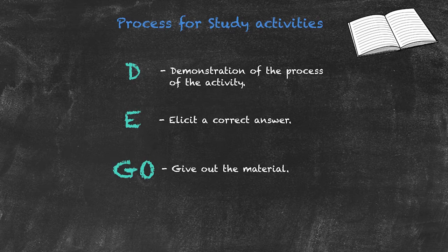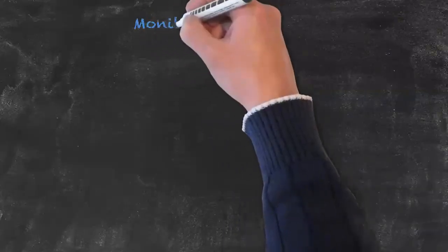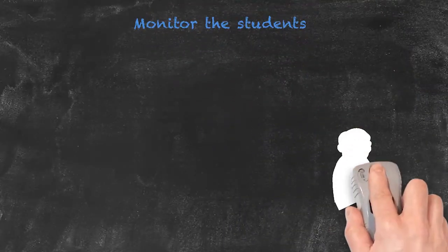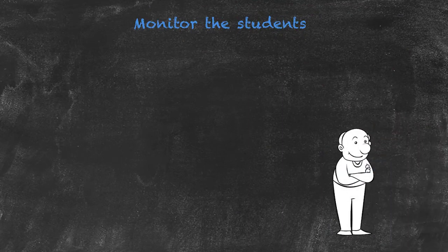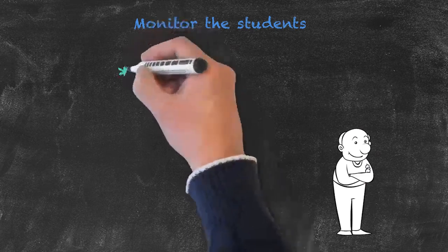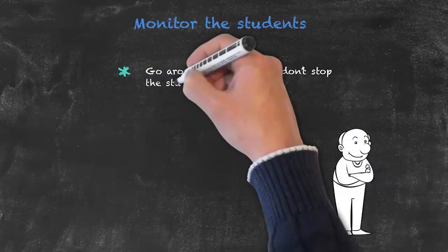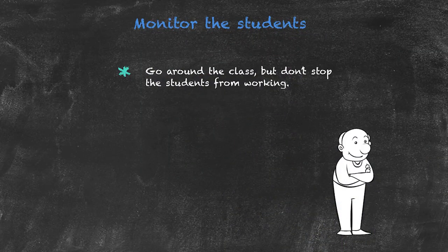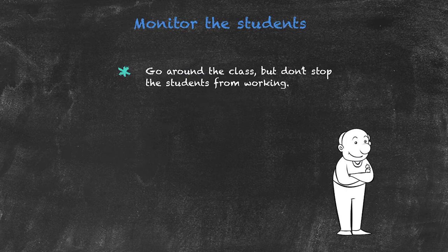Whilst the activity is taking place, you as the teacher can monitor what is going on. What do we do whilst this monitoring is taking place? You can go around the class. Whilst you're doing this however, it's very important that you don't stop the students from working.